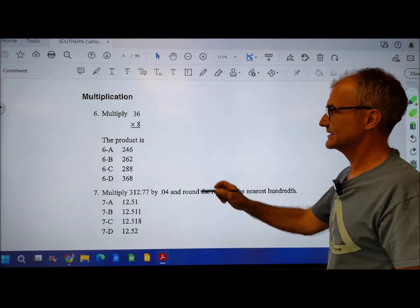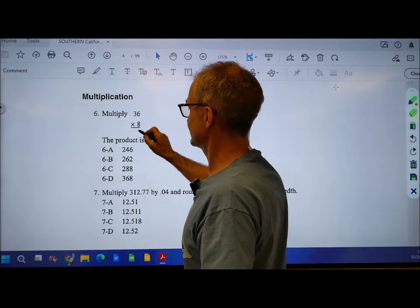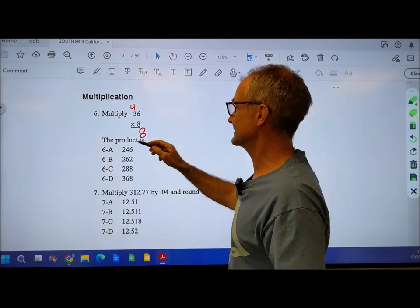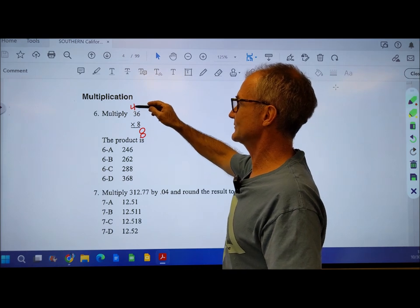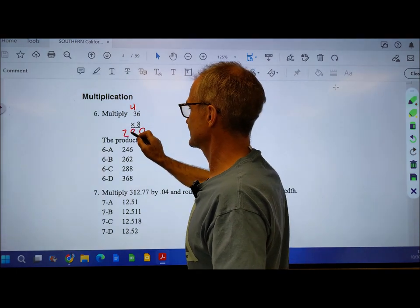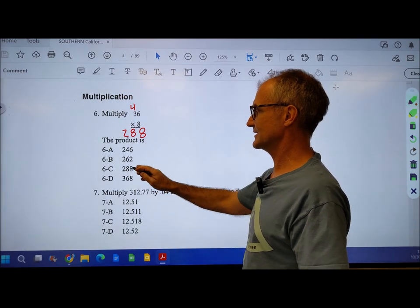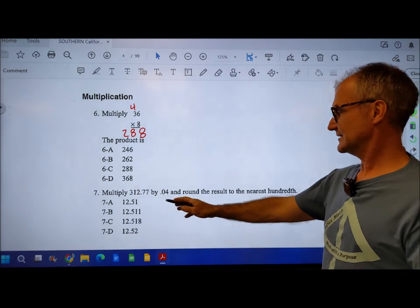Multiplication. 8 times 6 is 48. Now I'm carrying that 10 up here. 8 times 3 is 24, and then I add that 4 to it. So 24 and 4 is 28. The product is 288. Correct answer is 6C.